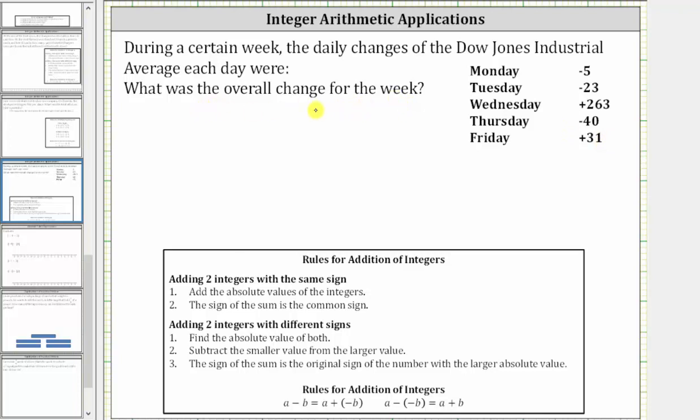To determine the overall change for the week, we need to sum the gains and losses, which gives us negative five plus negative 23, plus positive 263, plus negative 40, and finally, plus positive 31.